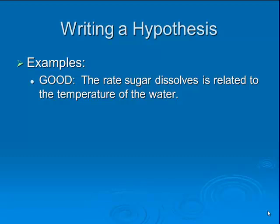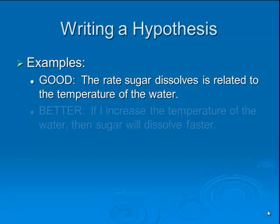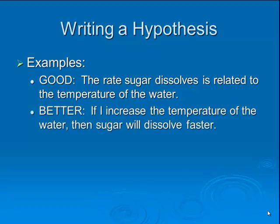Here are a few more examples of writing a hypothesis. A good hypothesis would be a very general statement that doesn't really give any specific prediction in any one direction. So: the rate sugar dissolves is related to the temperature of the water — you're predicting that there is a relationship. A better hypothesis would be that if-then statement: if I increase the temperature of the water, then sugar will dissolve faster.